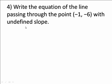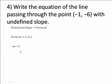So you should remember that undefined slope indicates that the line is a vertical line. It goes straight up and down. And any vertical line has an equation in the form of x equals a, where a is the x-intercept, or any x-value of any point on the line. So we know that this vertical line goes through the point (-1, -6), has an x-value of -1, and so the equation of the line is x equals -1.